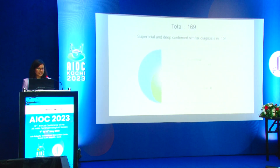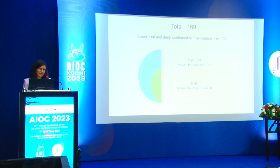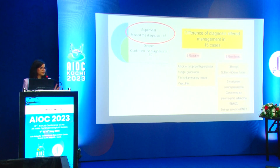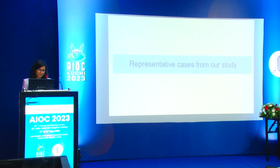When we analysed the samples, the superficial and deep layers confirmed a similar diagnosis in 154 cases. However, the superficial layer missed the diagnosis in 15 cases. Of these 15 cases, 9 were reactive and 6 were neoplastic, of which 5 were malignant. You can imagine the implication of missing or mismanaging these diagnoses if you don't take a representative sample.